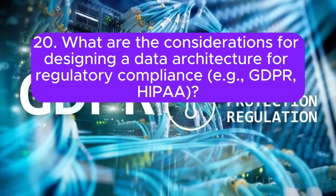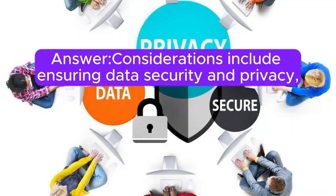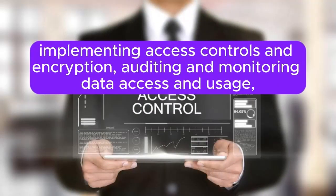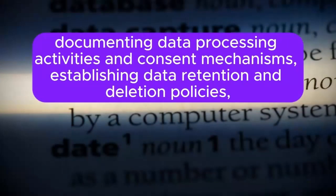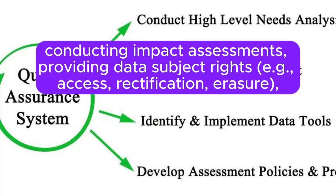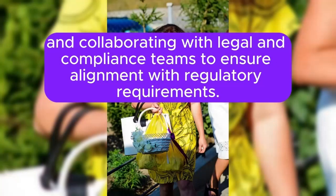Question 20: What are the considerations for designing a data architecture for regulatory compliance, for example GDPR and HIPAA? Considerations include ensuring data security and privacy, implementing access controls and encryption, auditing and monitoring data access and usage, documenting data processing activities and consent mechanisms, establishing data retention and deletion policies, conducting impact assessments, providing data subject rights such as access, rectification, and erasure, and collaborating with legal and compliance teams to ensure alignment with regulatory requirements.